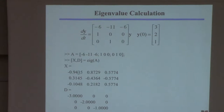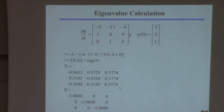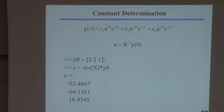MATLAB comes up with these numbers because it wants the norm of each eigenvector column to be 1. For example, this would be 1, minus 1, and 1 — MATLAB normalizes them so each eigenvector has norm 1. So the first step is finding the eigenvalues and eigenvectors.